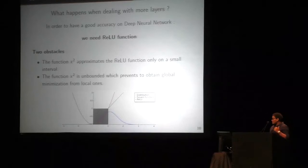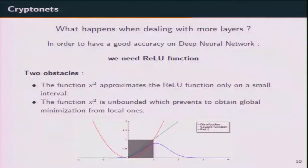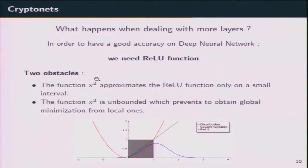In addition, due to the central limit theorem, the input of the activation function has a normal distribution. As you can see on the graph, half of the inputs to the square function do not well approximate the rectified linear function. For a good approximation, the square function needs the inputs to be within the interval [0, min] and 1.